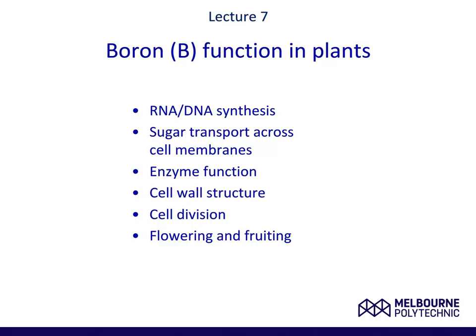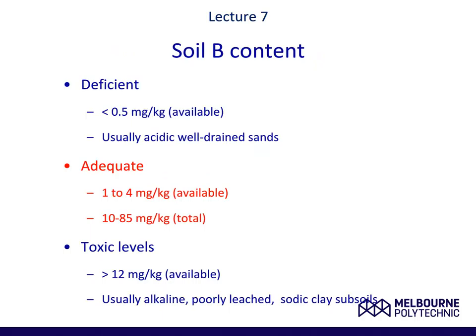Let us start with boron. Boron has several functions in plants. It is involved in RNA and DNA synthesis, sugar transport across cell membranes, enzyme function, cell wall structure, cell division, flowering and fruiting. When boron is found in the soil at a concentration of less than 0.5 mg per kg, it is considered deficient. An adequate concentration is between 1 to 4 mg per kg. Anything in the region of 12 mg of boron per kg is considered to be toxic.